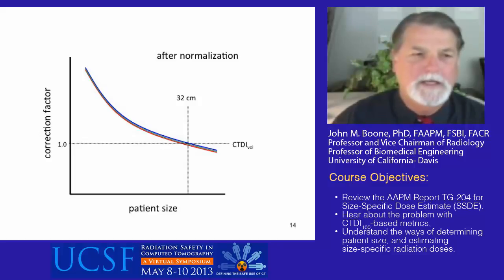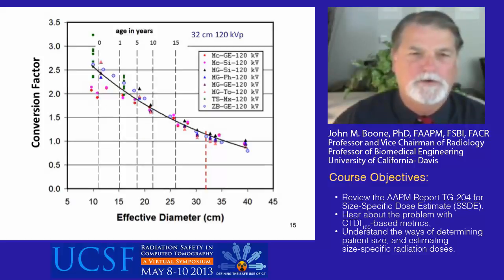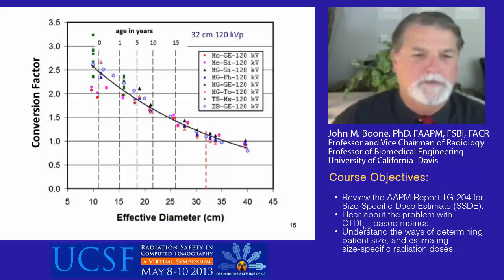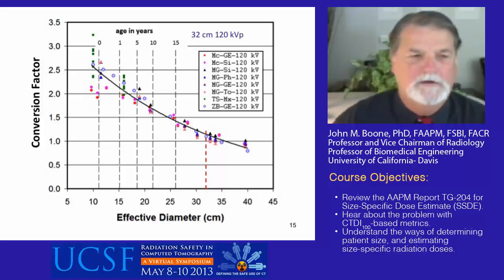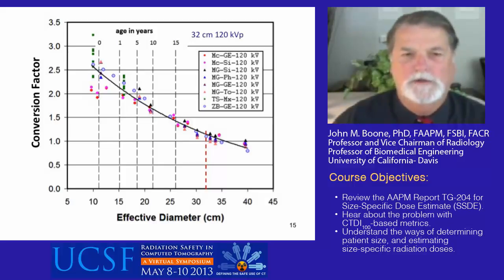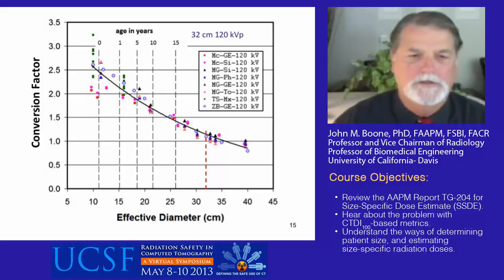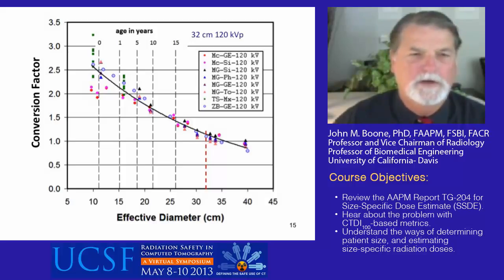When the data from all groups are combined at 120 KV for the 32-centimeter diameter phantom, it's a pretty good fit. The vertical red dashed line at about 32 centimeters would be expected to have a conversion factor of unity, but it's slightly higher because this correction implies a conversion from air KERMA — what CT-CTDI vol is measured in — to tissue dose in milligray. That's why the best-fit line is slightly elevated above unity at 32 centimeters.